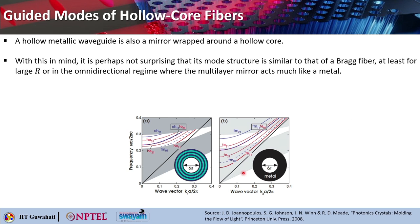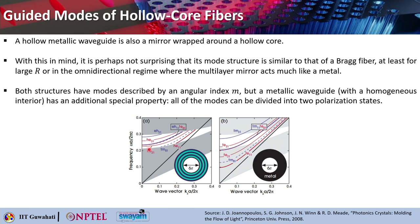What is this hollow perfect metal waveguide? This is basically a mirror wrapped around a hollow core. The perfect metal will also behave like a mirror, so it is like basically having the same functionality. With this in mind, it is not surprising to see that the mode structure of this case and the Bragg fiber is very similar, at least for large R or in the omnidirectional regime, where the multilayer mirror would act basically like a perfect metal to reflect all the modes.